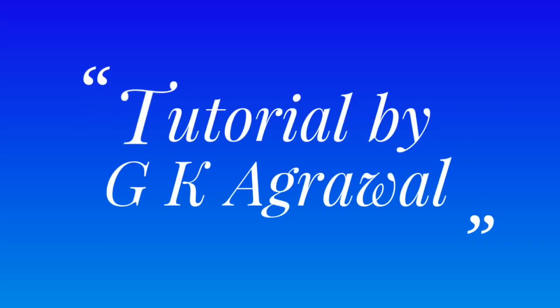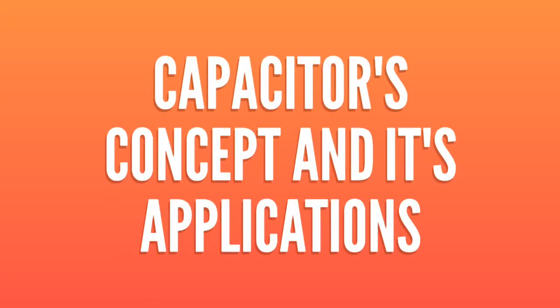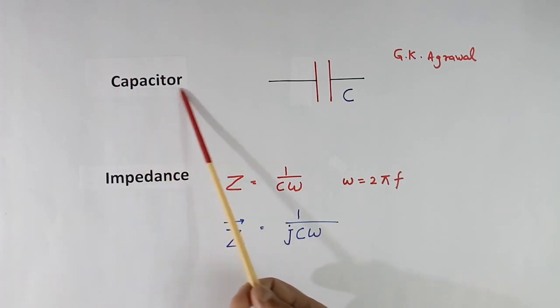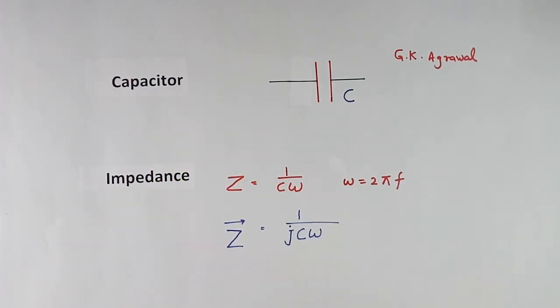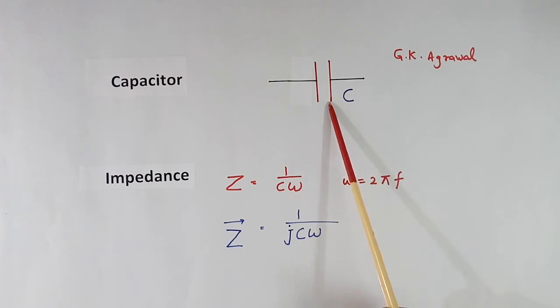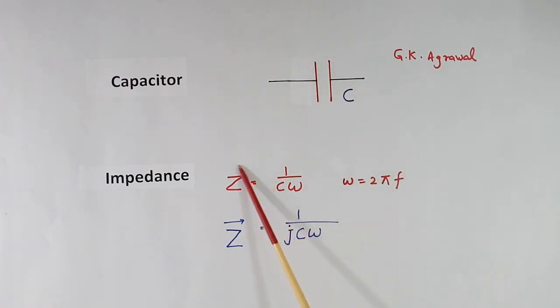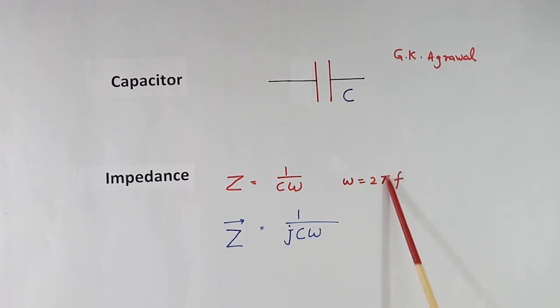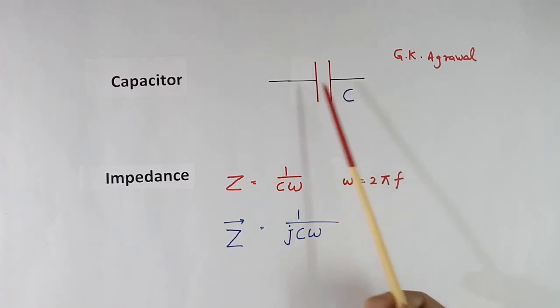Let's talk about capacitor. Welcome. Today we will discuss about capacitor. This is the symbol of capacitor. Now impedance of this capacitor is written by 1 by C omega, where omega is equal to 2 pi F. F is the frequency of the voltage applied across this capacitor.